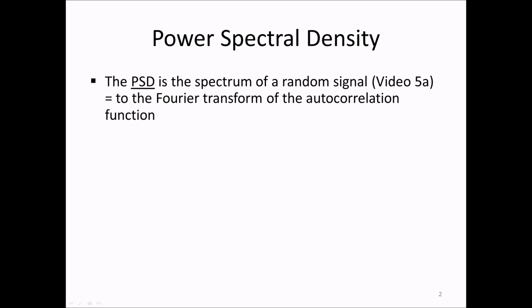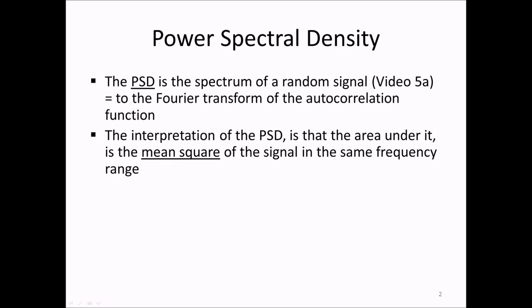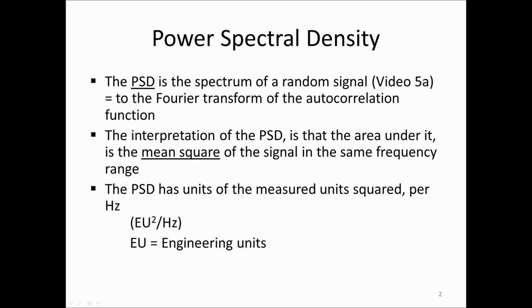We remember from Lecture 5 that the power spectral density of a random signal is the spectrum or Fourier transform of the autocorrelation function. The PSD is interpreted such that the area under it in a certain frequency range equals the mean square of the signal in that same range. The PSD has the units of EU squared per hertz. For example, an acceleration measured in meters per square second results in a PSD with units of meters per square second squared per hertz.